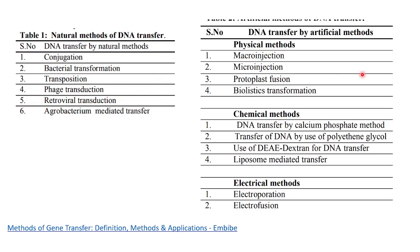We can categorize artificial methods as physical methods, chemical methods, and electrical methods. In physical methods, we have macroinjection and microinjection — as the name suggests, the DNA of interest can be directly injected into the nucleus of the target cell. Then protoplasm fusion, where two cells are fused, exchanging protoplasm and genetic materials between themselves.